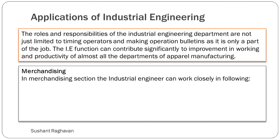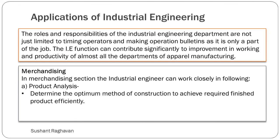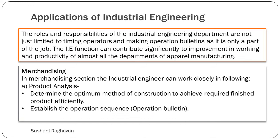In the merchandising section, the industrial engineer can work closely in the following areas: product analysis — determining the optimal method of construction to achieve the required finished product efficiently; establishing the operation sequence via an Operation Bulletin; and specifying the equipment type and work aids to be used.